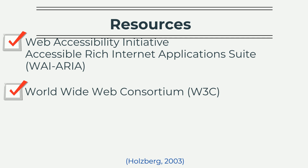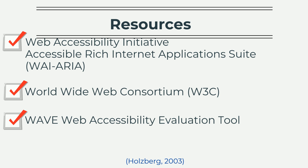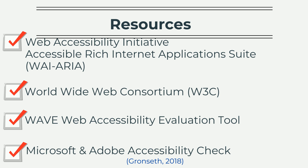Priority Level 1 features must be utilized, while Priority 2 and 3 features should be utilized. WAVE, a Web Accessibility Evaluation Tool, is a free website providing immediate error and alert information about accessibility barriers. With regards to document accessibility resources, Microsoft and Adobe both provide accessibility check features in their programs.